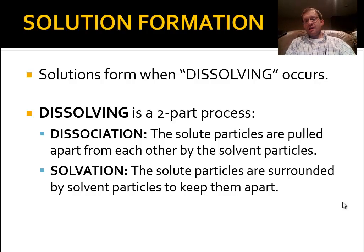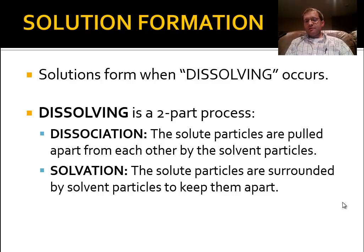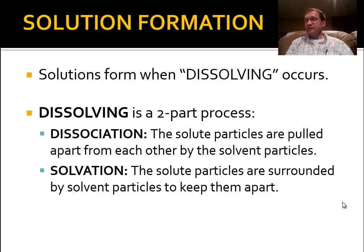Solvation is the second part of the process. During solvation, the solute particles that are now pulled apart and separate are then surrounded by solvent particles in order to keep them apart. Solvation is necessary to make the dissociation more long-lasting or semi-permanent. It's the surrounding of a solute particle with usually many solvent particles, making what's called a complex — sometimes called a solvated or hydrated complex when water is the solvent.